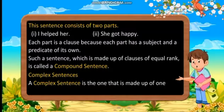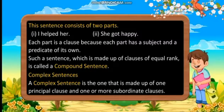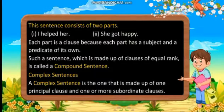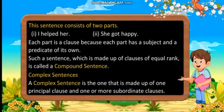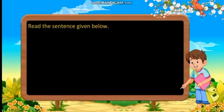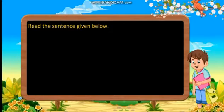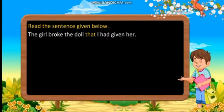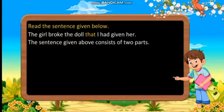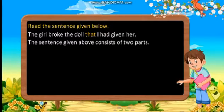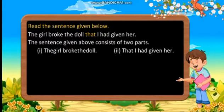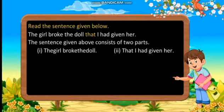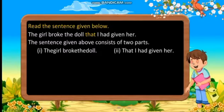Complex sentences. A complex sentence is the one that is made up of one principal clause and one or more subordinate clauses. Read the sentence given below: 'The girl broke the door that I had given her.' This sentence consists of two parts: 'The girl broke the door' and 'that I had given her.'